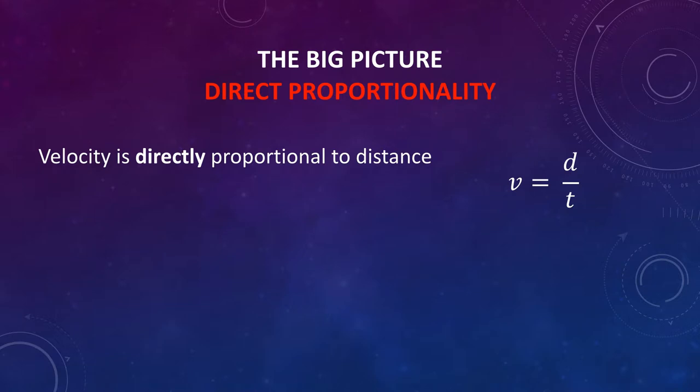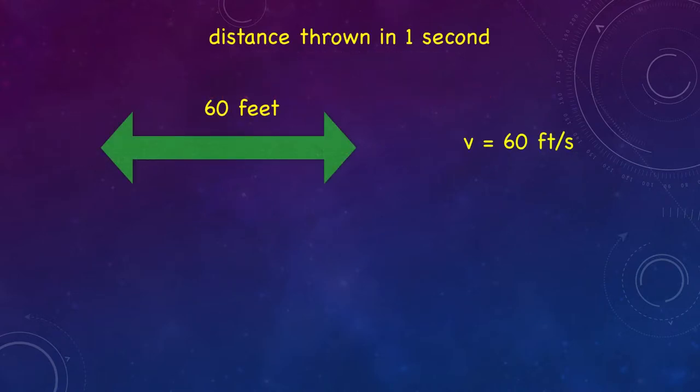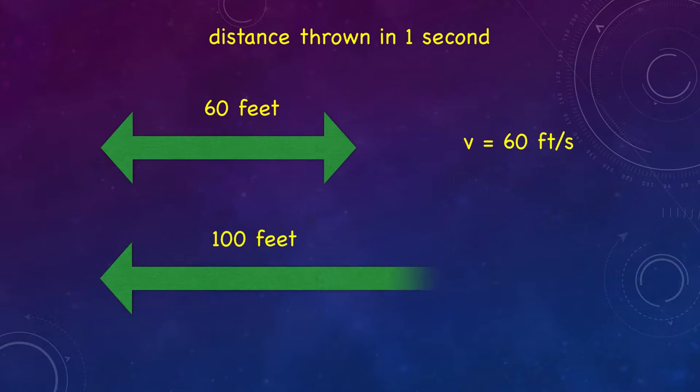Velocity is directly proportional to distance, so if we increase the distance, keeping the time the same, we also increase the velocity. In other words, if the pitcher threw the ball farther than 60 feet in one second, the speed of the ball would be faster than 60 feet per second.